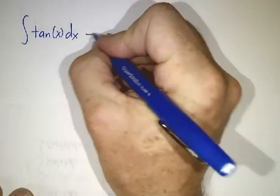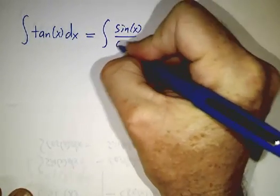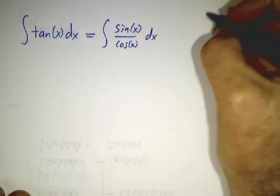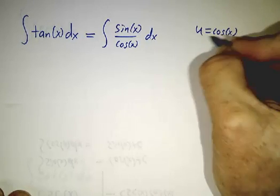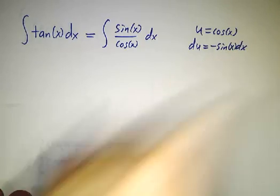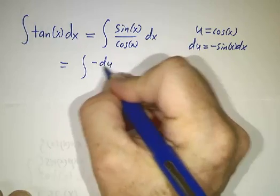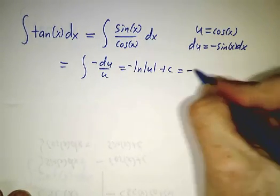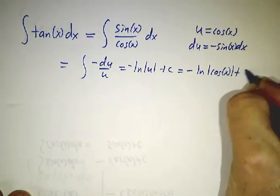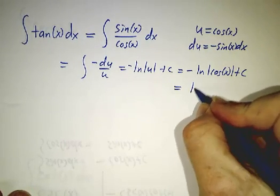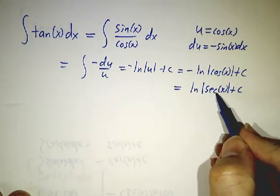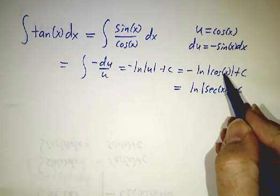The first interesting case is tangent. When in doubt, write everything in terms of sines and cosines. You notice the numerator is minus the derivative of the denominator, so this wants to be done with a u-substitution, where u equals cos and then du is minus sin dx. This becomes the integral of minus du over u, which is minus the natural log of the absolute value of u, plus a constant. That's minus the natural log of cosine of x plus a constant. You'll sometimes see this written as the natural log of the secant of x plus a constant, because secant is the reciprocal of cosine, so the log of secant is minus the log of cosine — you can write it either way, it's the same function.